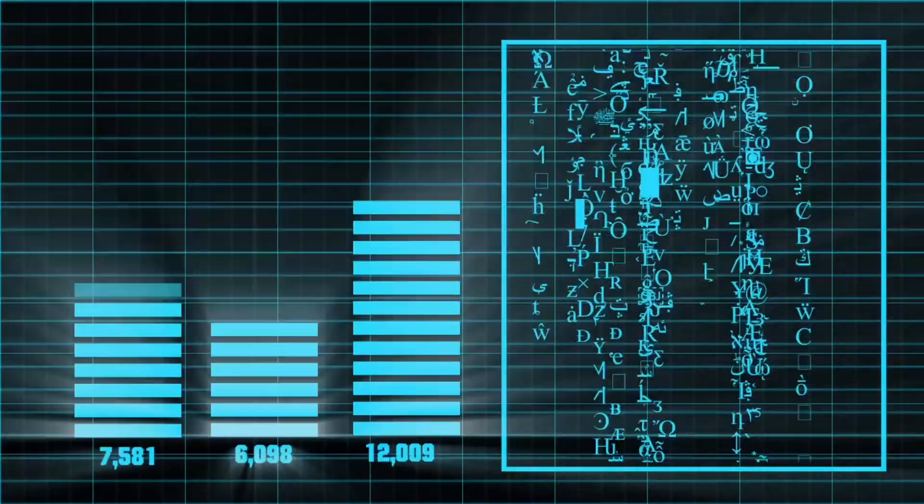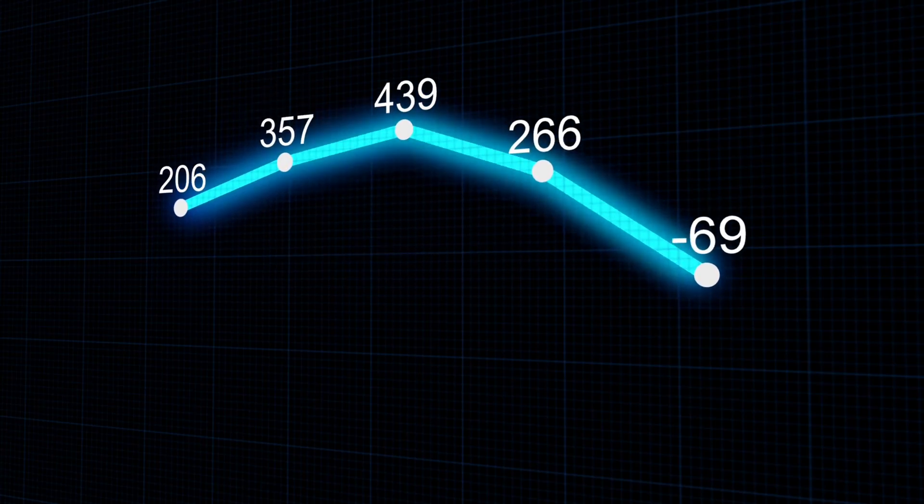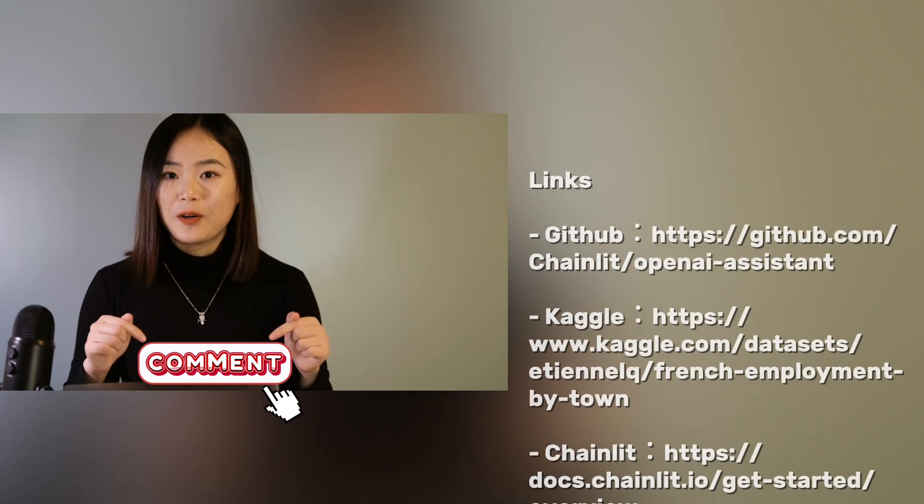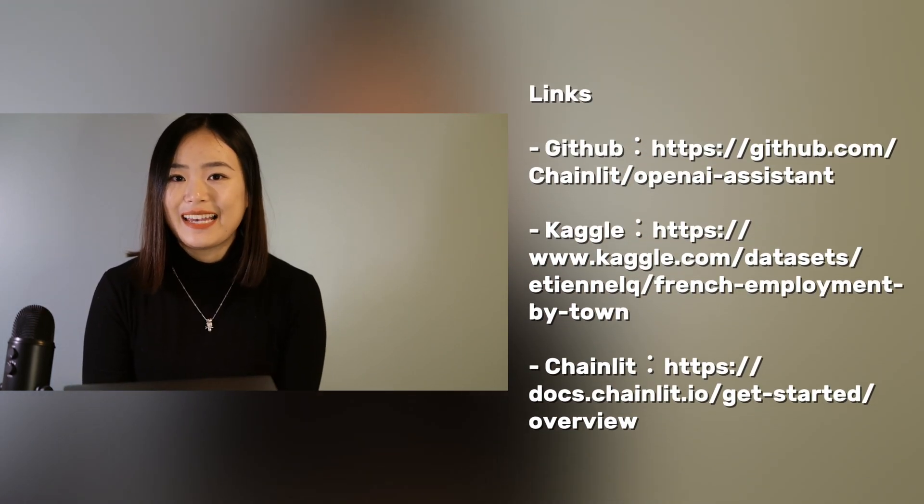And that's how you can create your own data analyst using Chainlit. I hope this video gave you some inspiration and ideas for your projects. At the end of the video, I'll share the GitHub and Kaggle links with you so you can explore the examples, experiment with different prompts, generate various types of graphs, and discover new possibilities. If you found this video helpful, make sure to like, subscribe, and hit the notification bell. Drop any questions or suggestions in the comments below. Thank you for watching, and see you next time — bye-bye!